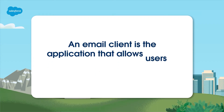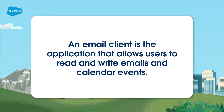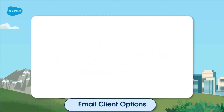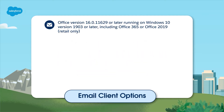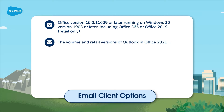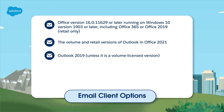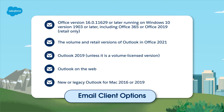Which email client do you use? An email client is the application that allows users to read and write emails and calendar events. Desktop and web email client options for the Outlook integration are Office version 16.0.11629 or later, running on Windows 10 version 19.03 or later, including Office 365 or Office 2019 retail only, the volume and retail versions of Outlook in Office 2021, Outlook 2019 unless it is a volume licensed version, Outlook on the web, and new or legacy Outlook for Mac 2016 or 2019.